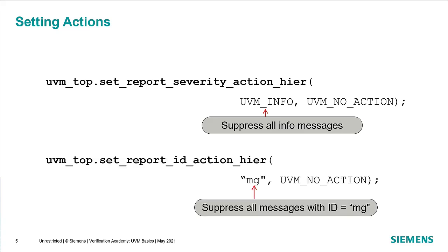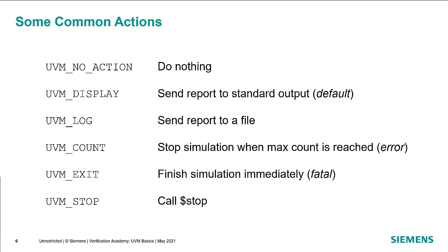You can also control the action based on the ID. Using set_report_ID_action_HIER, you can specify the ID, and UVM_NO_ACTION will suppress all messages with that ID. Some common actions: UVM_NO_ACTION does nothing — i.e., suppresses the message. UVM_DISPLAY sends the report to standard output, which is the default. UVM_LOG sends a report to a file. UVM_COUNT stops the simulation when the max count is reached — this is the default for a UVM_ERROR along with displaying the message. UVM_EXIT finishes the simulation immediately, which is the default for a fatal. UVM_STOP will call $stop.